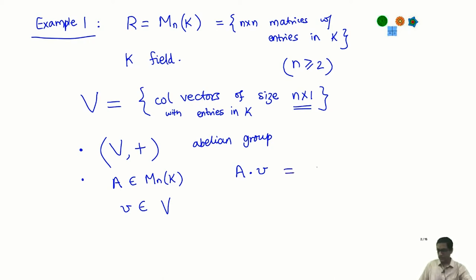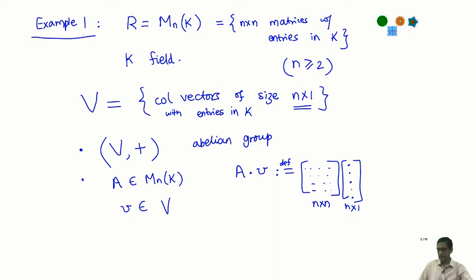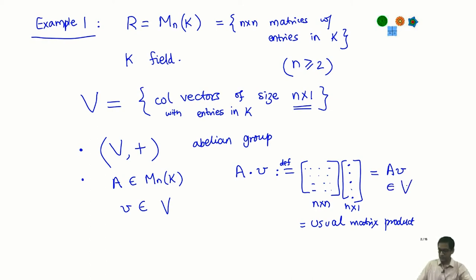There is only one obvious thing we can do: A is an n×n matrix and V is an n×1 column vector, so we define A·V to be just the usual matrix product of the n×n matrix A with the n×1 matrix V. The result is again an n×1 matrix, so it is again an element of V. This is the definition of scalar multiplication, and it is easy to check all the axioms.